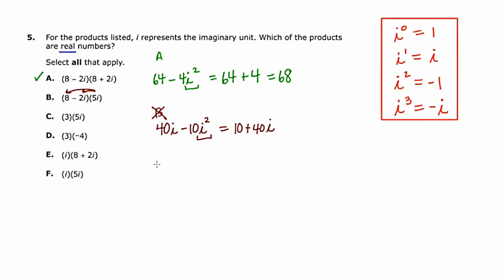Let's go to c. c is just multiplying these two things together. So very little work is going to be shown here. It's just 15i. Because it contains an i, I know that it's not real. So this does not work either.